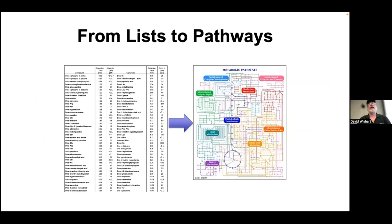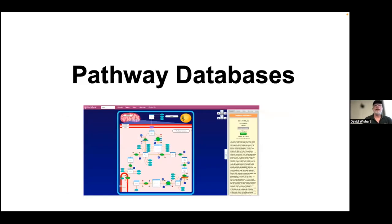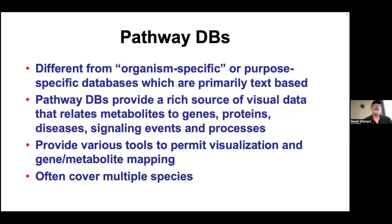The other thing we try to do in metabolomics is not only take our lists and learn more about metabolites themselves, but to gain contextual information — going from lists to pathways. You'll get some of that tomorrow with the work done in MetaboAnalyst. Pathways are a little different from organism-specific or purpose-specific databases, because those are text-based lists of numbers and tables, whereas pathways are image databases. They give you visual data relating metabolites to genes, proteins, diseases, signaling events, and processes — a lot of what molecular biology and physiology is.